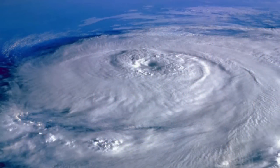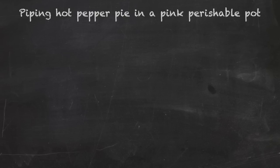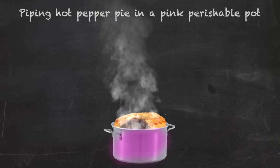But according to real-life meteorology and scientific mutations, could you create your own flittismus defer and make it rain piping hot pepper pie in a pink perishable pot?